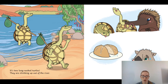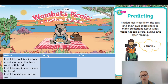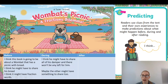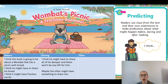Just then they hear two animals chanting: 'G'day! G'day!' It's two long-necked turtles — they're climbing up out of the river. Look at Wombat's face again. Wombat glances at Echidna and the two long-neck turtles and then at his damper. Boys and girls, you now need to make your during prediction. Press pause and write what you think is going to happen next. I have written in my during column: 'I think he might have to share all of his damper and there won't be any left for him — maybe the others might have something to share too, because I saw the long-neck turtles were holding something.' Press pause now and write in your during column.